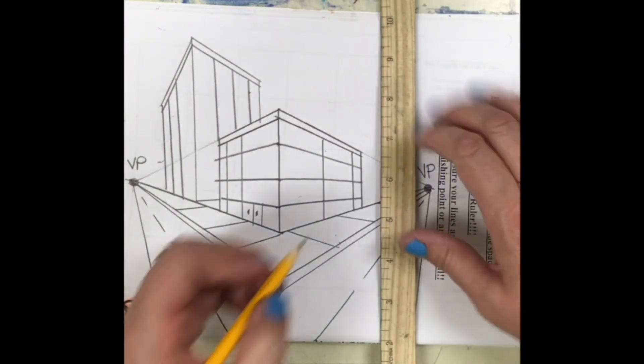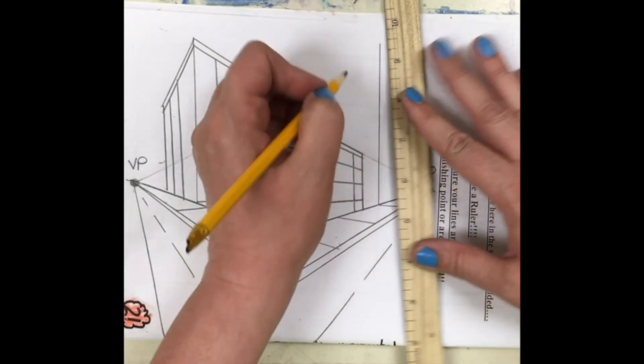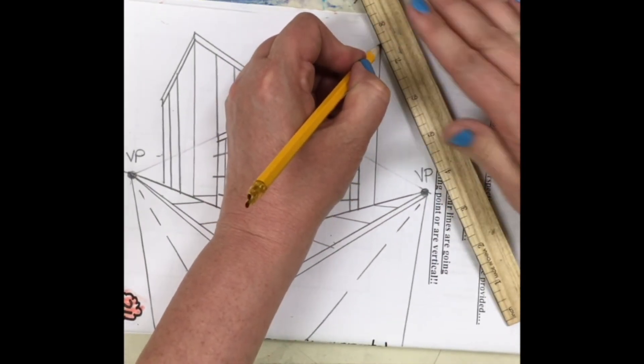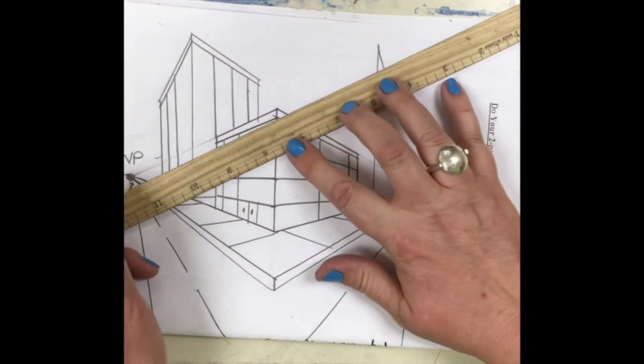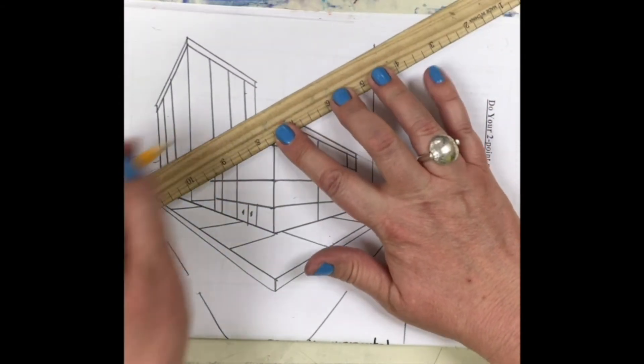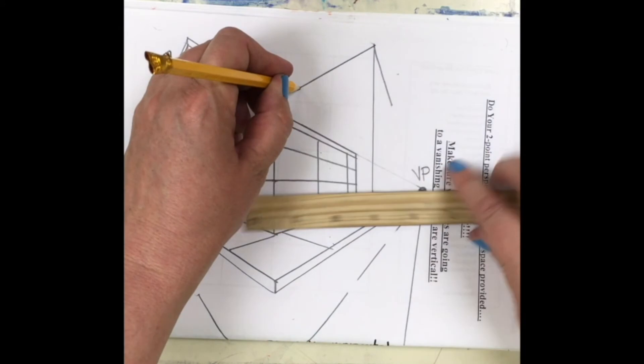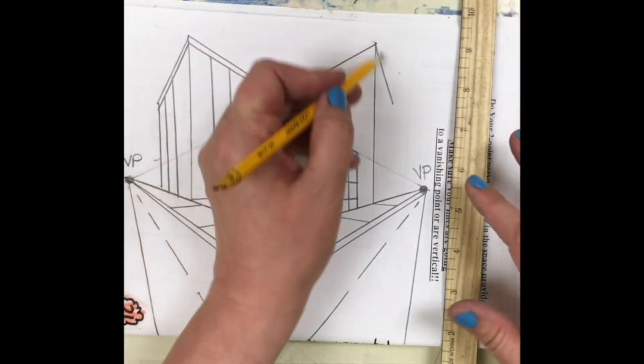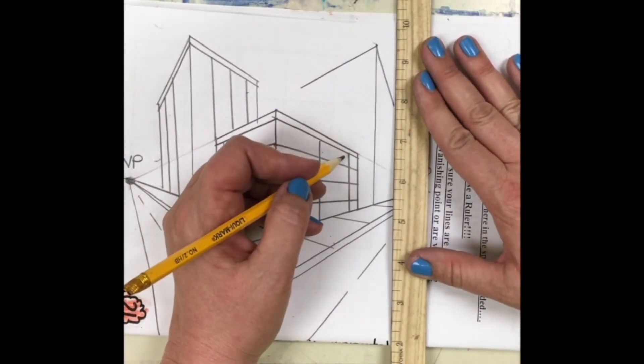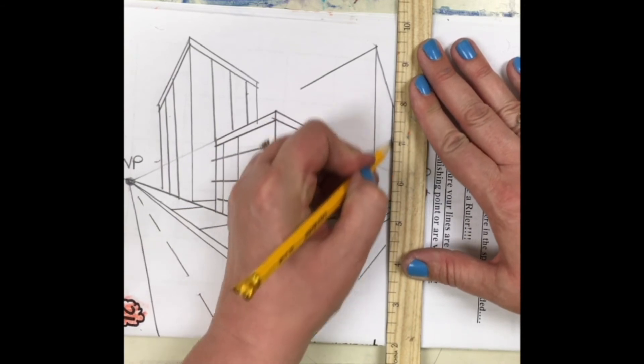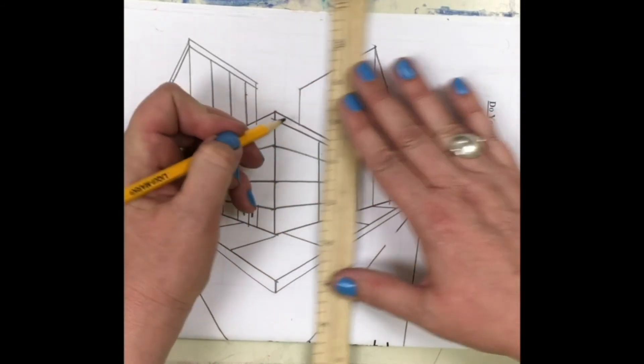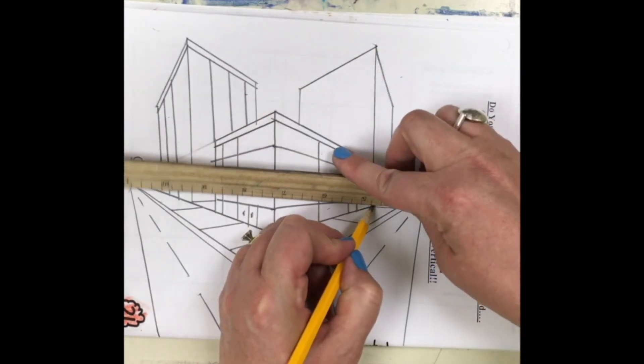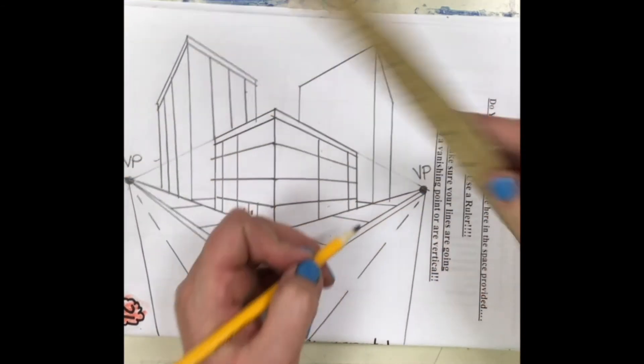Now I have to have one more building. Going to the vanishing point. No matter what my brain says, I go to the vanishing point. And that looks like a really weird little triangle. But if I put the back of the building there, put the back of the building, go to the vanishing point for the bottom.